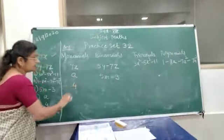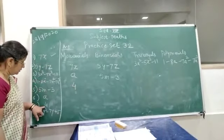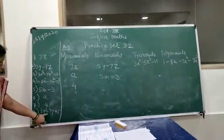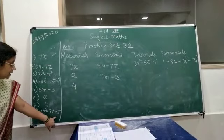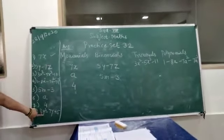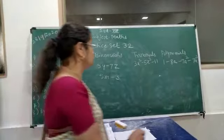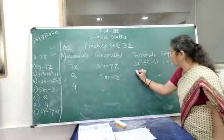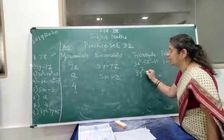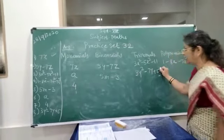4, again it is a polynomial. Then last one, 3y square minus 7y plus 5. So here if you see, three terms are there. So this is a trinomial. 3y square minus 7y plus 5.